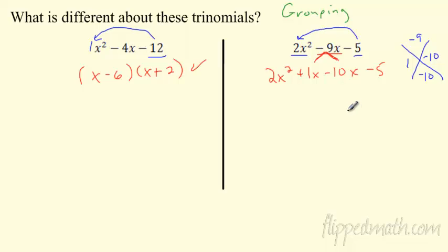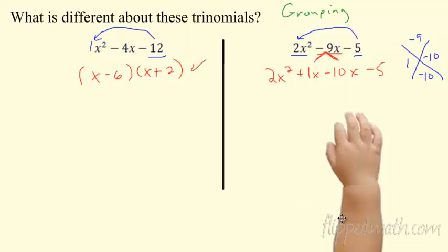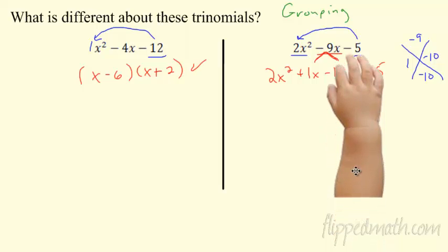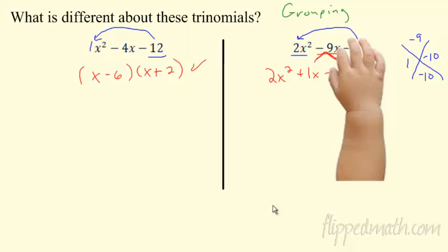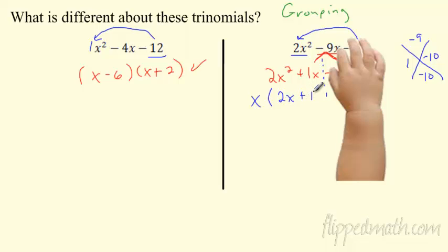So we rewrote negative 9x as 1x minus 10x — it's the same thing. Why are we doing that? We're going to do a thing called factor by grouping. I'm going to look at grouping of these terms to come up with the answer — this can solve a lot of different things later on when we get more terms. So let's take a look at the first group. I'm going to cover up the last two parts and look at just the first two terms. What do they have in common? They both have an x, so I can take the x out and I'm left with 2x plus 1.